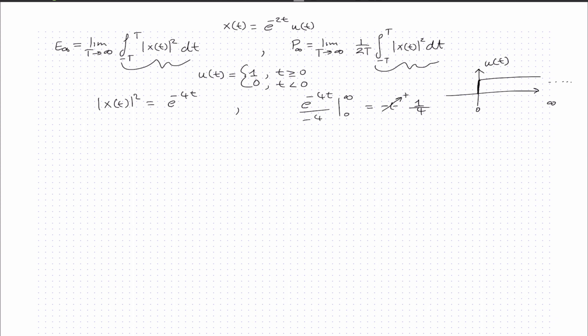So we know that the energy for the signal x(t) equals the limit as T approaches infinity. The integration gives us 1/4, so the energy equals 1/4.